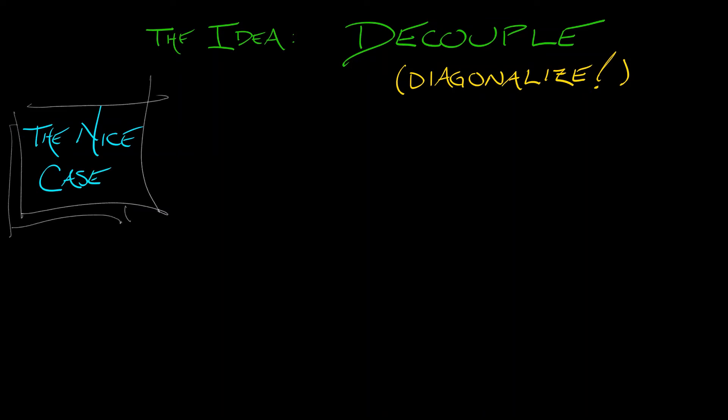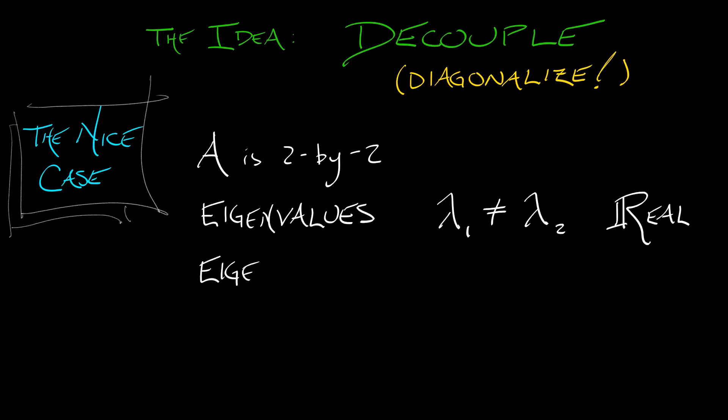A is two by two. We have eigenvalues lambda one, lambda two, distinct and real. We have eigenvectors V1 that goes with lambda one, and V2 that goes with lambda two.